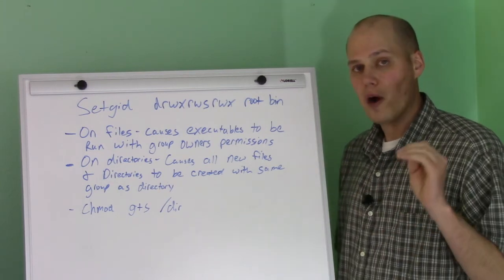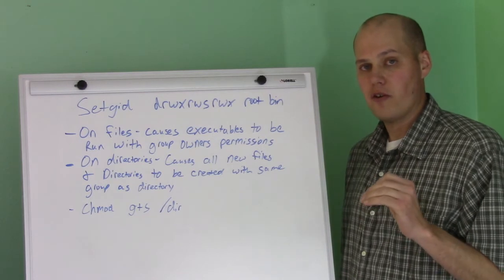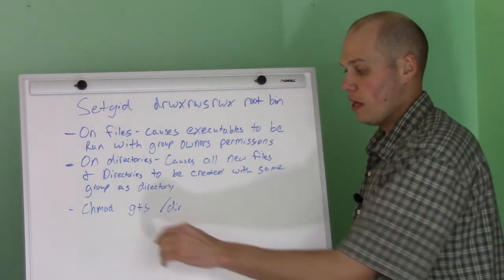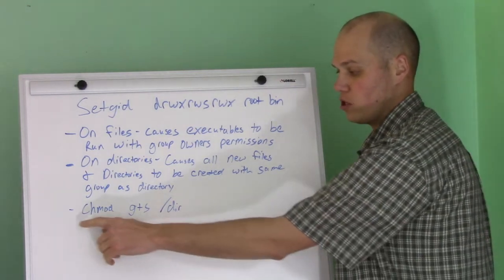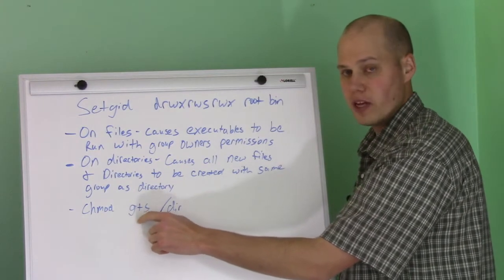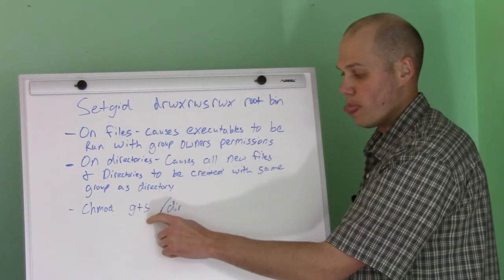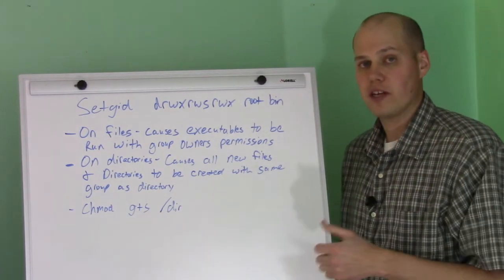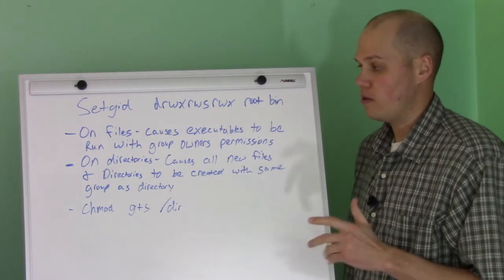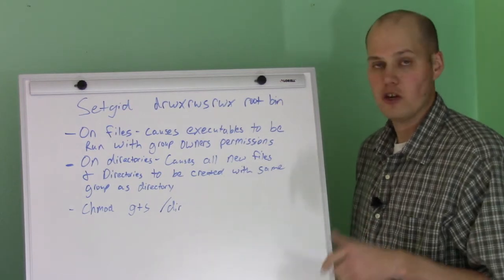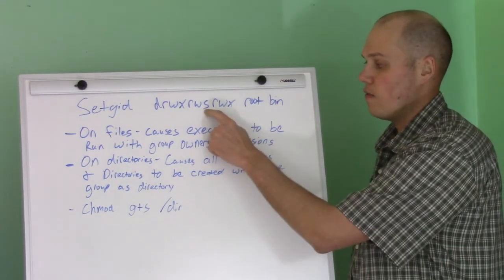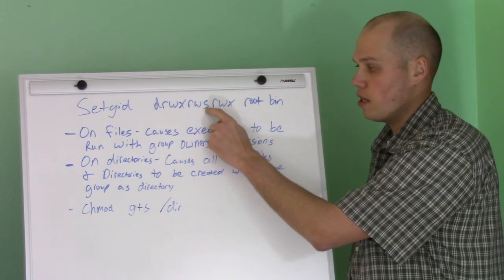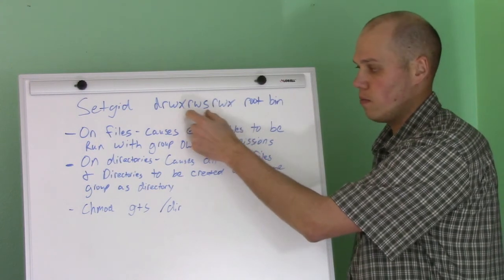If you want to set the set GID bit on a directory or file, the easiest way is to do chmod g+s followed by the directory or file you want to set it on. Then you can do an ls -l and verify you see the S instead of the X for the group part of the permissions.